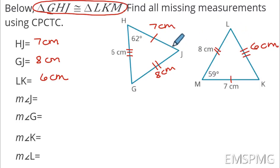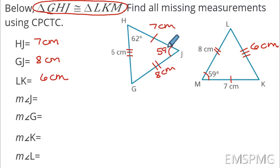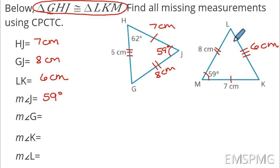Moving to the next one: GJ. GJ is the first and last vertices in the first triangle. L and M are the first and last vertices in the second triangle. So GJ is going to match with LM — I'll use two dashes here. I can already see the answer: GJ is 8 centimeters.